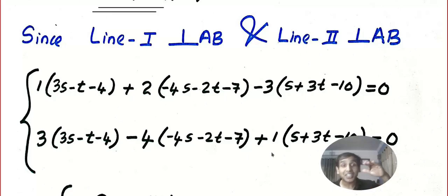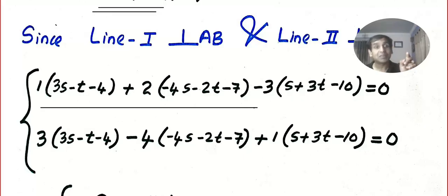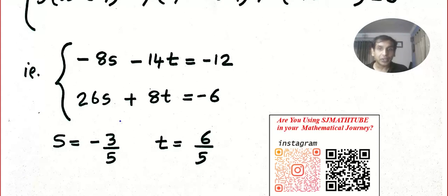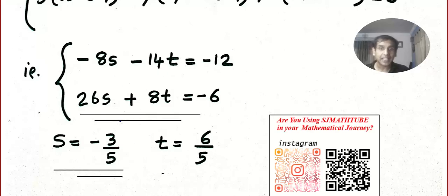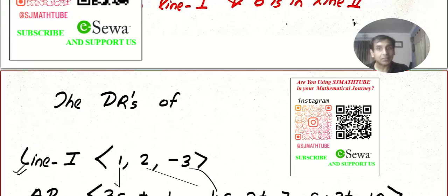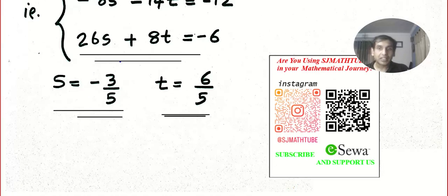Pause the video and try it. Using a calculator I got the values of s and t. Now I'm going to draw the same picture once more and plug in the value of t, which is 6/5. So the point on Line 1 becomes: x = 6/5 + 3, y = 2 × 6/5 + 5, z = −3 × 6/5 + 7.